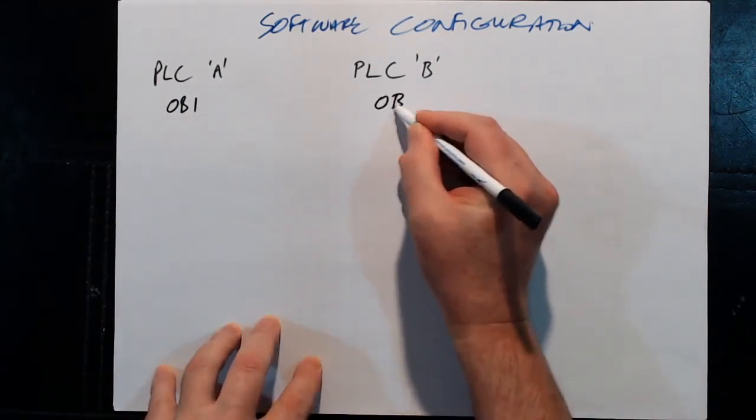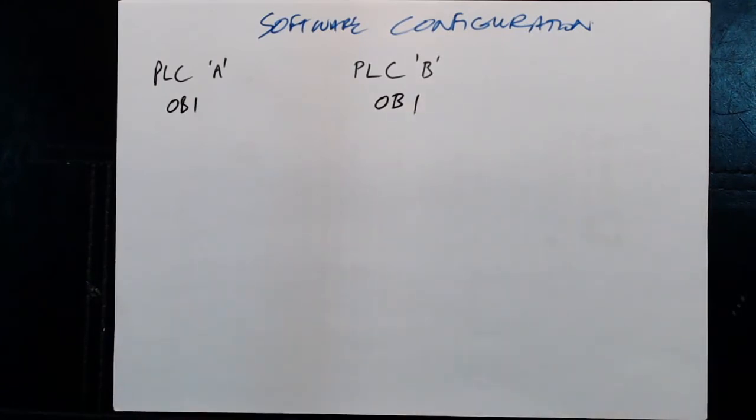Now some of you may have been reading in the manual and discovered that they talk about using one of the interval processed OBs, OB 36 or OB 38, to run the redundant program. But the main idea is to separate the main program from the non-redundant program. But what I've found is that running it like that is very slow. And so running it in OB1 but taking care to keep the different programs separated is the best idea.